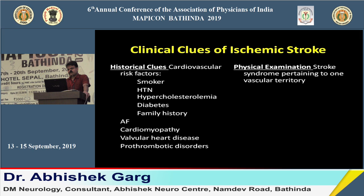Clinical clues for ischemic stroke include cardiovascular risk factors like smoking, hypertension, high cholesterol, diabetes, family history of stroke, atrial fibrillation, cardiomyopathy, or valvular heart disease. When such patients present with sudden onset focal neurological deficit, we should favor ischemic stroke over hemorrhagic.